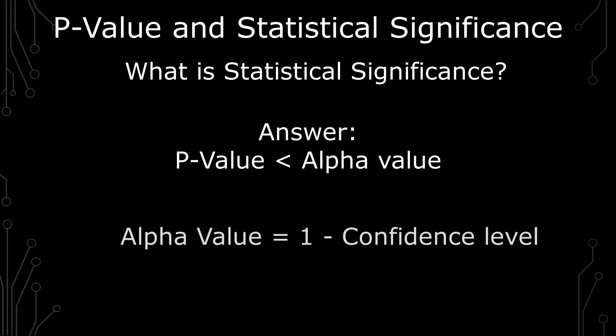So the alpha equals one minus the confidence level. If you have a confidence of 90%, it's going to be an alpha of 0.1. Another name for that alpha is called a type one error. That is the probability you'll have a false positive.